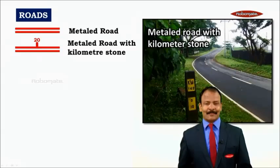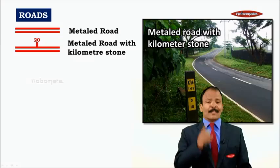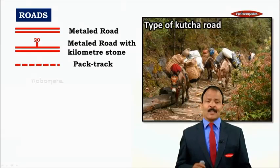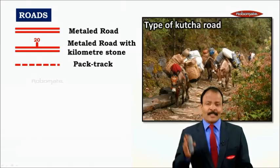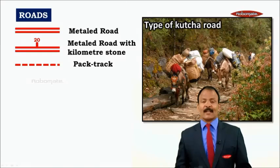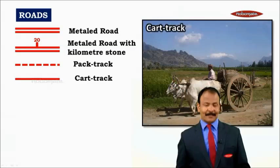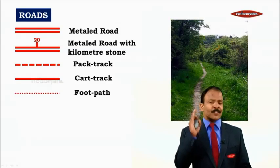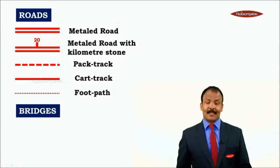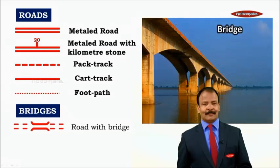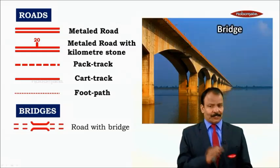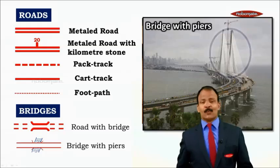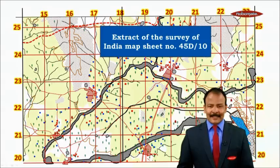Metal roads are also called pakka roads. This is a metal road with a kilometer stone. Backtracks are utilized by donkeys and mules — they carry loads, that's why they're called backtracks. Cart tracks and footpaths are also shown, with a footpath shown by dotted lines.